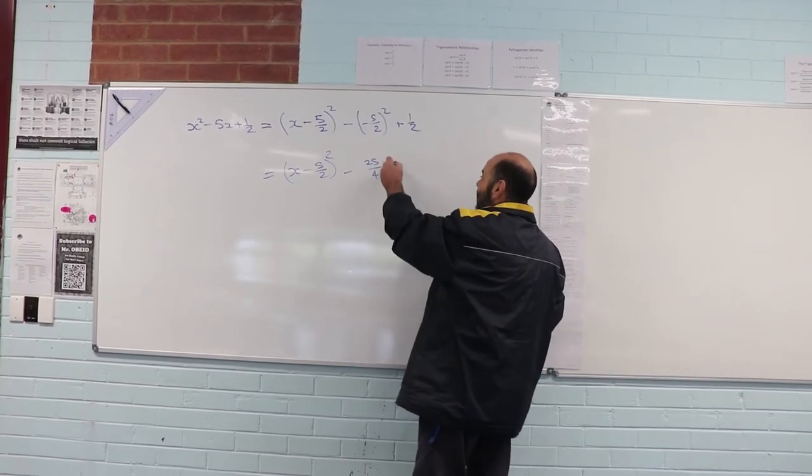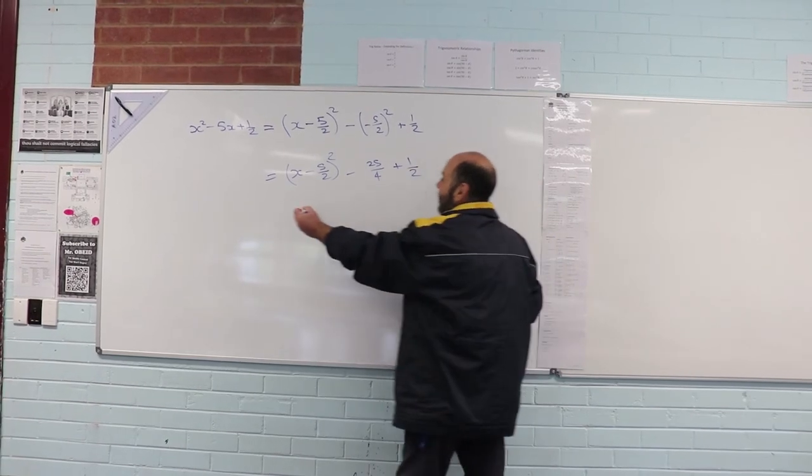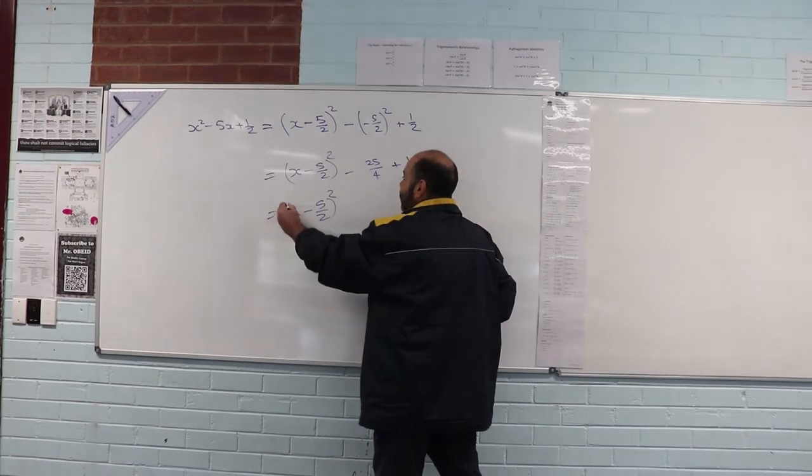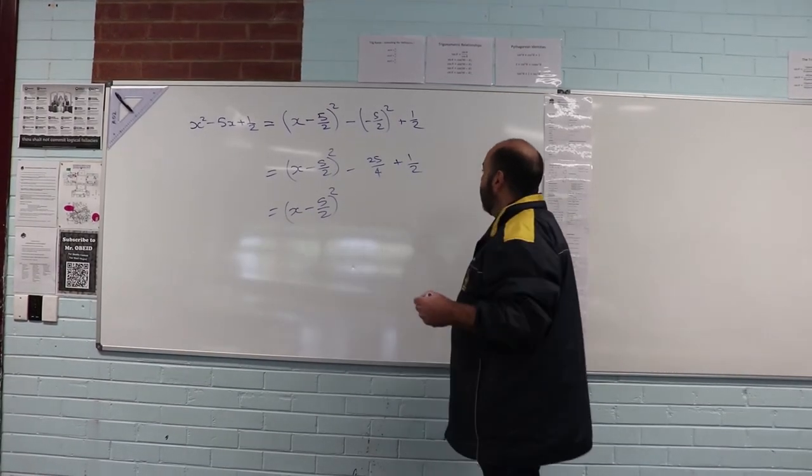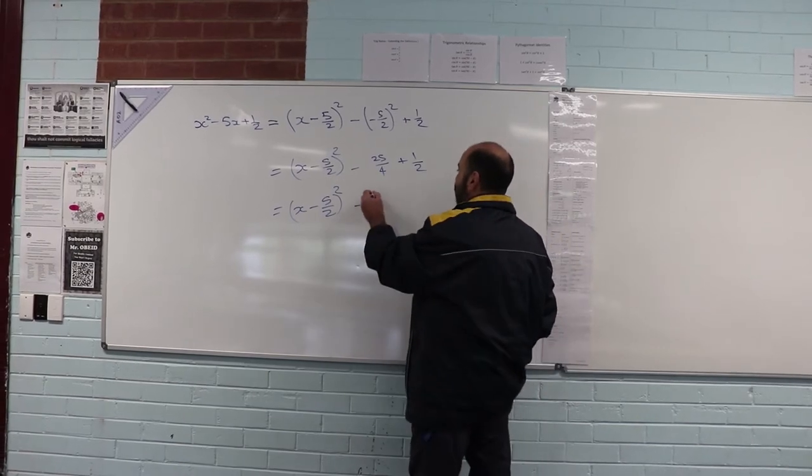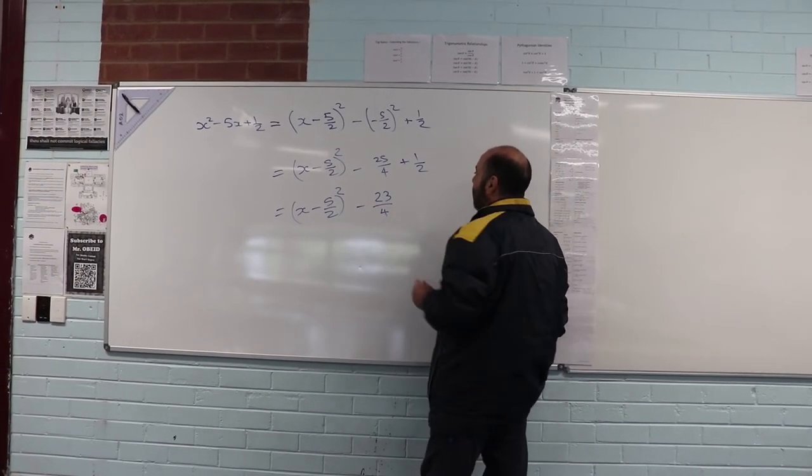Plus a half. And so that gives me (x - 5/2)² minus 23/4.